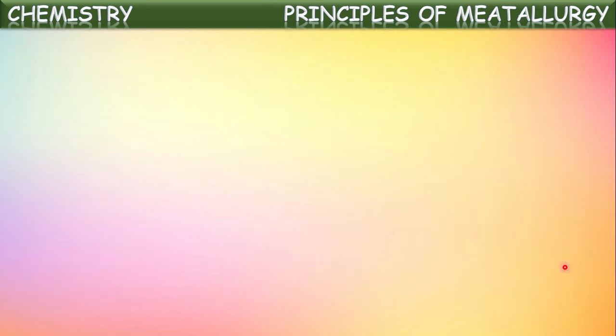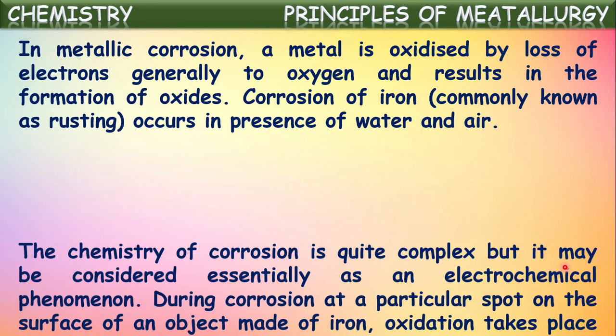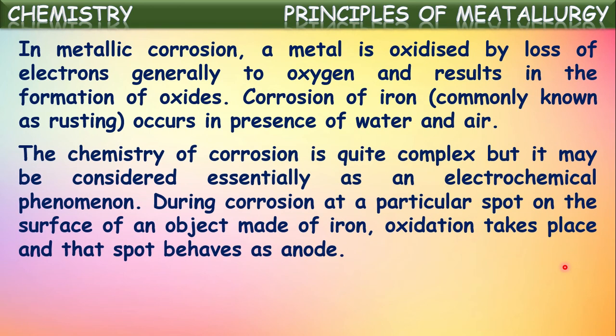That is concluded from this activity. In metallic corrosion, a metal is oxidized by the loss of electrons to oxygen, resulting in the formation of oxides. The corrosion of iron occurs in the presence of water and air. The chemistry of corrosion is quite complex but may be considered essentially as an electrochemical phenomenon, where electron transfer is happening. During corrosion, at a particular spot on the surface of a metallic object made of iron, oxidation takes place and that spot behaves as an anode.